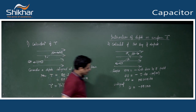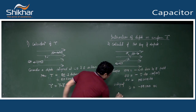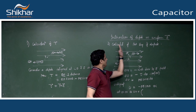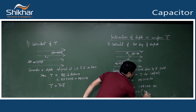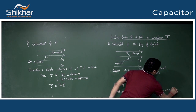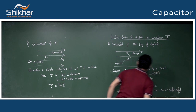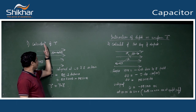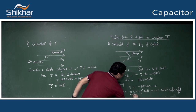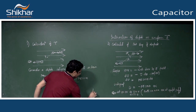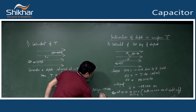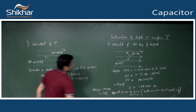U = -pE cosθ + C. At θ = 90°, potential energy is zero because both plus and minus charges are at equipotential surface, so q·V terms cancel giving C = 0. Therefore, potential energy = -pE cosθ, which can also be written as -p·E (dot product).